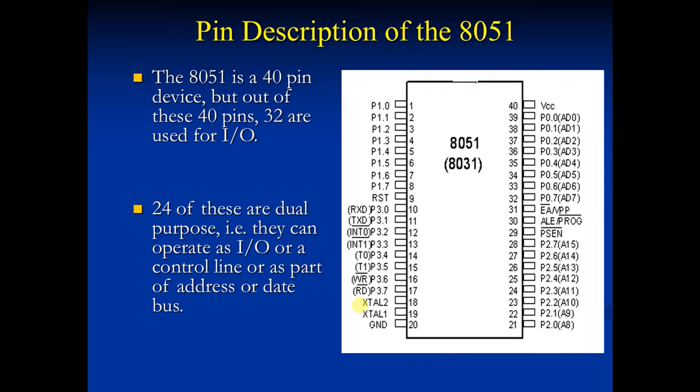Now move on to EA port. What this EA port will do? It is an active low pin. When EA is equal to 0, then microcontroller accesses from external program memory only, means ROM only. But when EA is equal to 1, then it accesses internal as well as external program memory, means RAM and ROM.